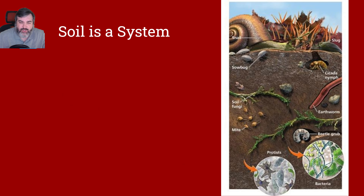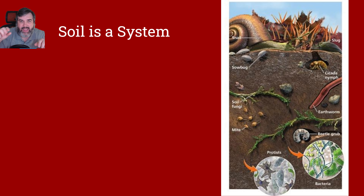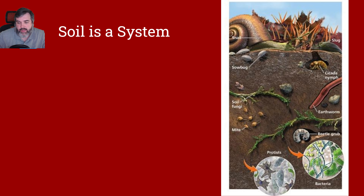Now, understand soil is a system. Soil is made up of many different parts. We're going to talk more about the inorganic parts today, but a lot of it does come from organisms that work with the soil. Plant matter, leaves, all that stuff tends to decay and break down. A lot of different organisms live in the soil — they create pockets, break down nutrients, and do lots of different things.